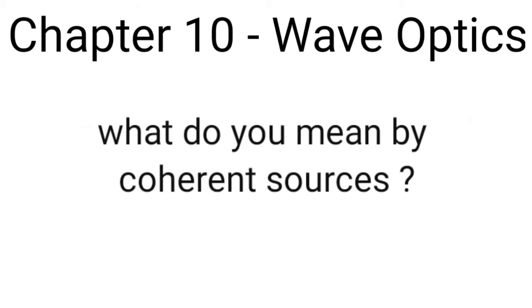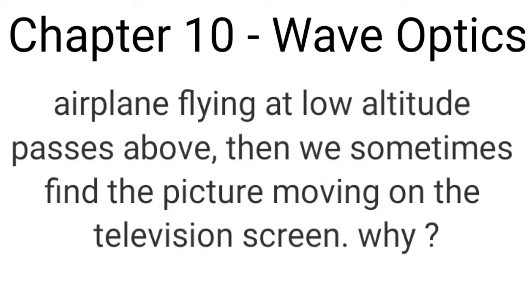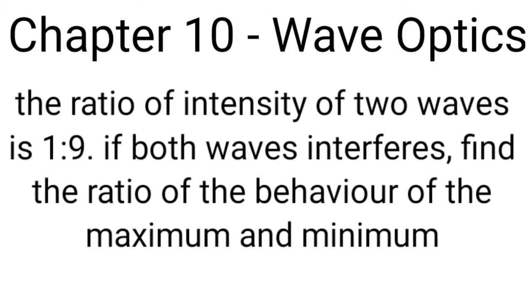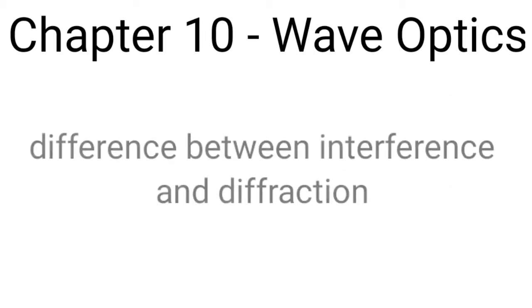Next question is: what do you mean by coherent sources? Next question is: an airplane flying at low altitude passes above, and we sometimes find the picture moving on the television screen — why? Next question is: the ratio of intensity of two waves is 1:9. If both waves interfere, find the ratio of maximum and minimum intensity. Next question is: difference between interference and diffraction.